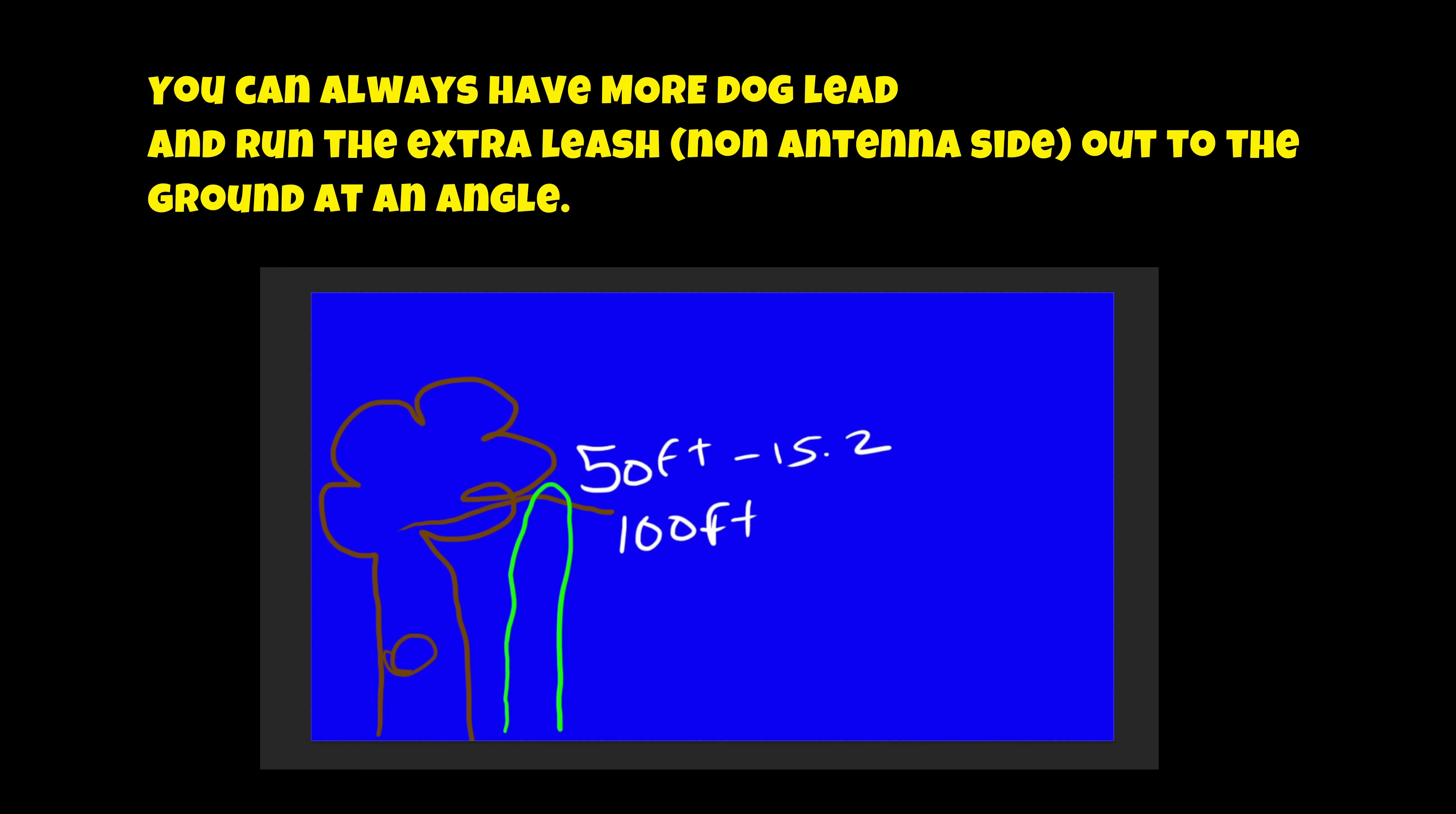So for example, let's say that tree branch you see out at the park is approximately 50 feet in height. That comes out to about 15.25 meters. And if we were to throw that leash or dog lead over that branch, we would need to come back down another 50 feet, which would come out to 100 feet of total leash or possibly 30.5 meters of dog leash.